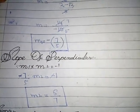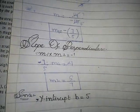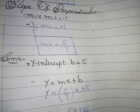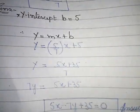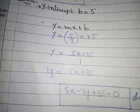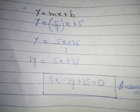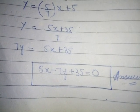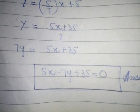After taking LCM: numerator = 5/3 + 3 = 14/3, denominator = 2/3 - 4 = -10/3. The 3s cancel: slope m = -14/10 = -7/5. For perpendicular slope: m1·m2 = -1, so (-7/5)·m2 = -1, giving m2 = 5/7. Since y-intercept b = 5, using y = mx + b: y = 5/7·x + 5. Multiplying by 7: 7y = 5x + 35, so 5x - 7y + 35 = 0. This is the required equation.